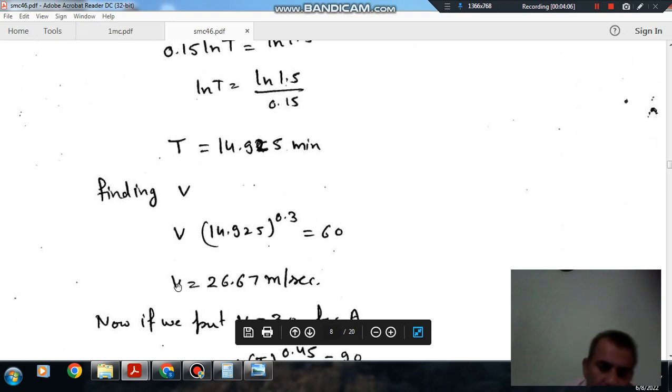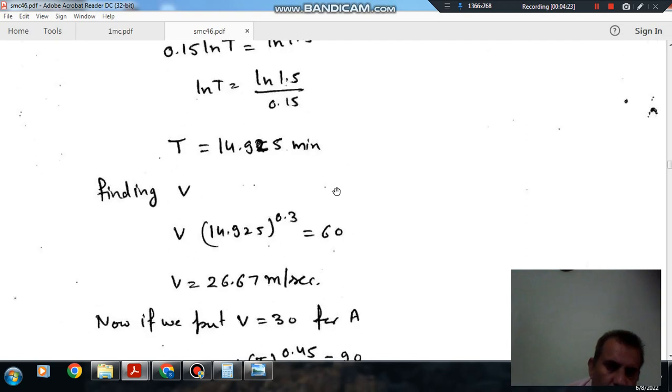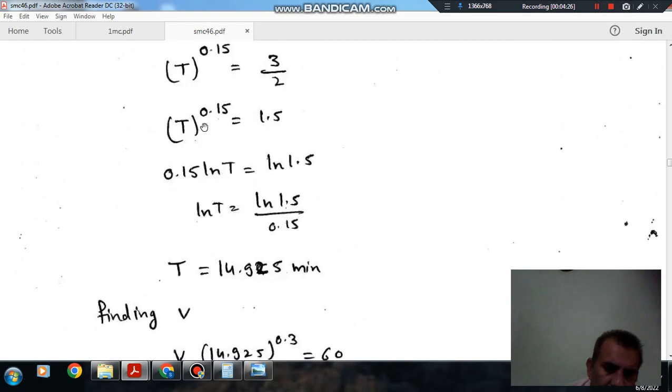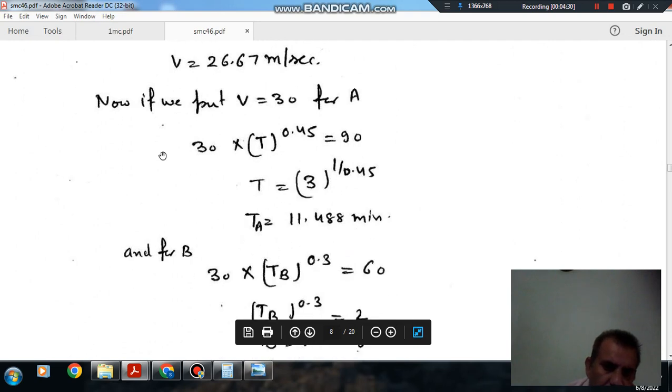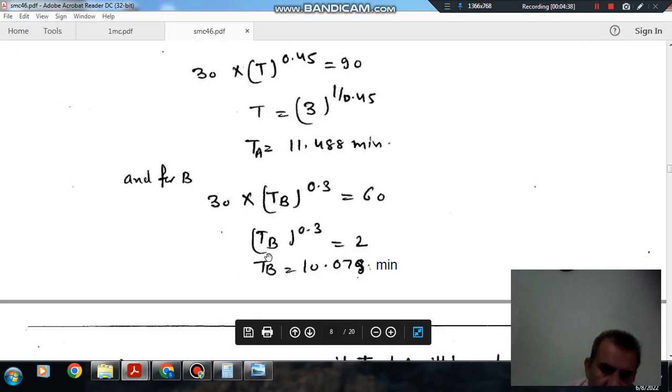So that is the speed at which the tool life for both the tools is same. Now if we take, suppose, we take V more than this, suppose we take V = 30. Now for A, if we put 30 and find out T, so T comes out as 11.48. And for B, if we put V is equal to 30, T comes out as 10.079.